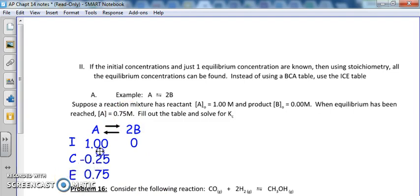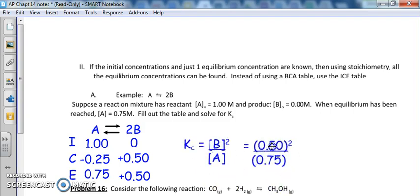So we can fill this out just like we did at any other BCA table. This is going to be 0.25. So I'm going to subtract. What's 0.25 divided by 1 times 2? You get 0.5. And so adding together, I get 0.5. So I just filled out the table and now we need to solve for Kc. Here's my law of mass action. I'm going to plug in my values and then I get 0.33.